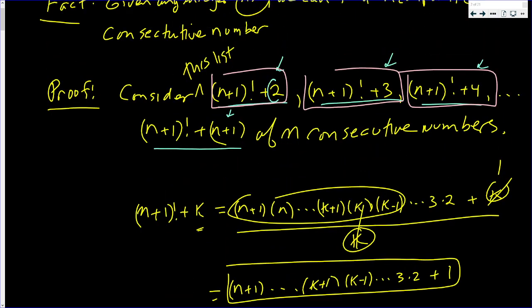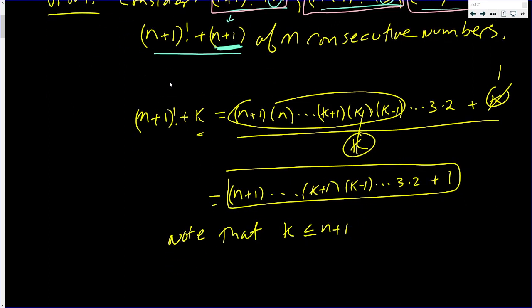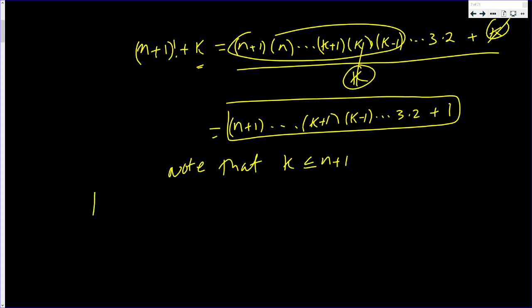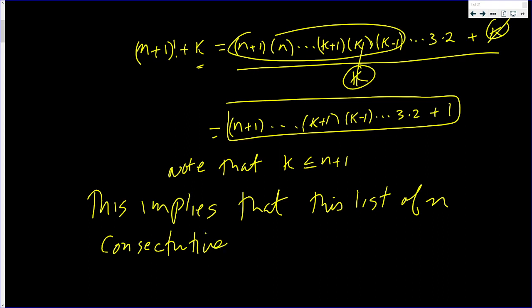Each and every one of these numbers are less than or equal to n+1. The last one is where you're equal. This implies that this list of n consecutive numbers are all composite. And that's all I wanted to show. That completes this proof.